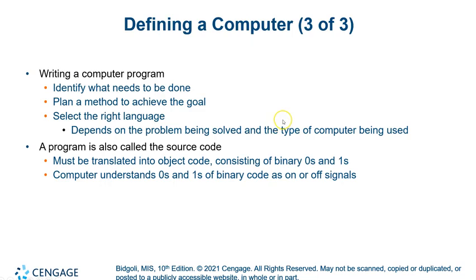It depends on the problem being solved, the type of computer, and also organizational standards — for example, one company may standardize on one language while another standardizes on something different. The program is also called source code — humans look at source code, and then it gets translated. All a computer can truly understand is ones and zeros. Computers are electronic devices and use what's called binary code — zeros and ones — and by combining them in groups of eight, we can create what a computer understands.